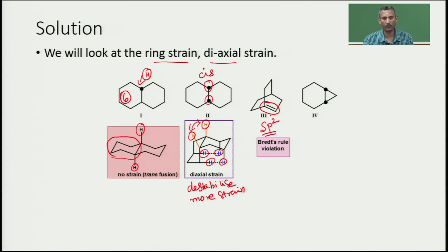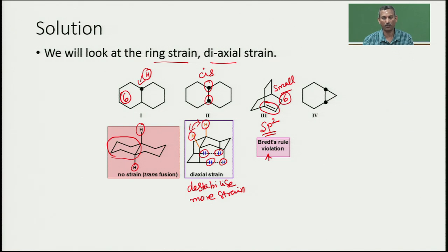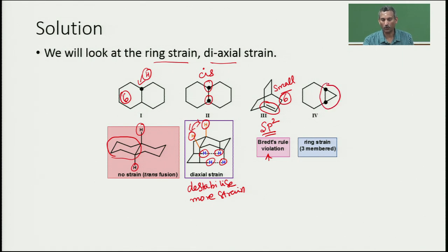The next structure has a double bond at the bridgehead, which violates Bredt's rule. A bridgehead carbon cannot have a double bond because it would require sp2 hybridization, which is too strained in a small cyclic system of only six carbons. Attaining planarity in such a small system would be highly strained, so this structure cannot exist.